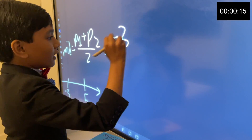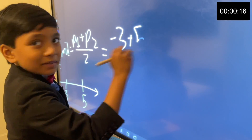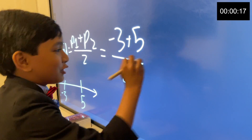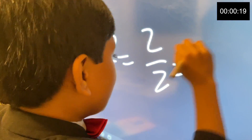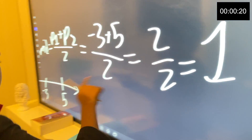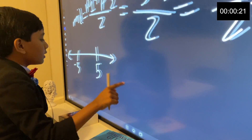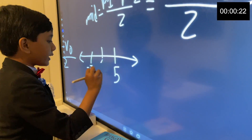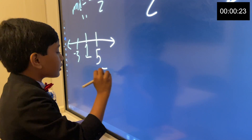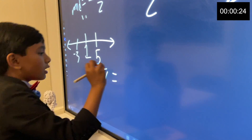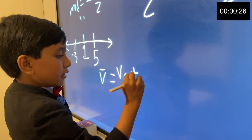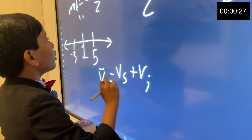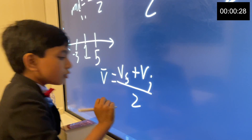Minus three plus five over two, which is two over two, which is one. And so the midpoint here is one. The average velocity is equal to VF plus VI over two.